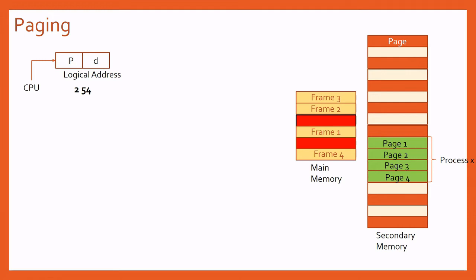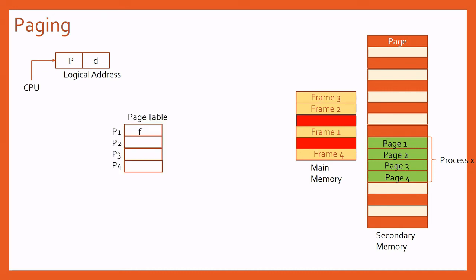One approach would be to store the address of frame 1 at the end of frame 1 pointing to frame 2, and so on through frame 3 to frame 4. But accessing frames this way — going through each frame sequentially to reach the next — would be time consuming. This chaining approach is not a good solution for the paging scheme, so let's look at the next solution.